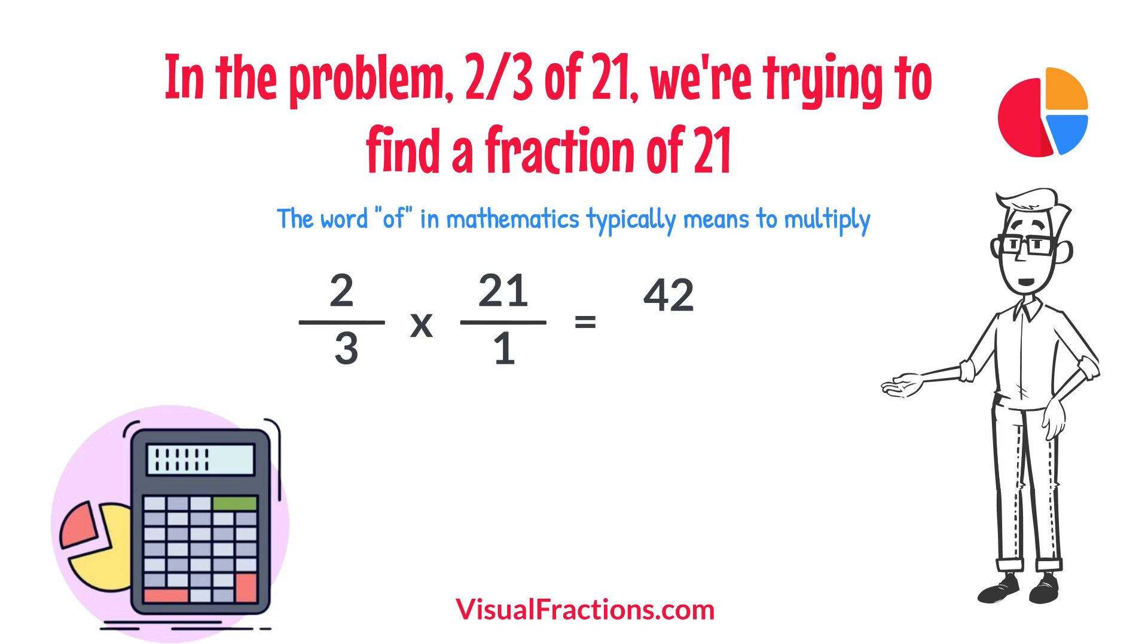Next, multiply the denominators, 1 times 3 equals 3. We now have a new fraction, 42-thirds.